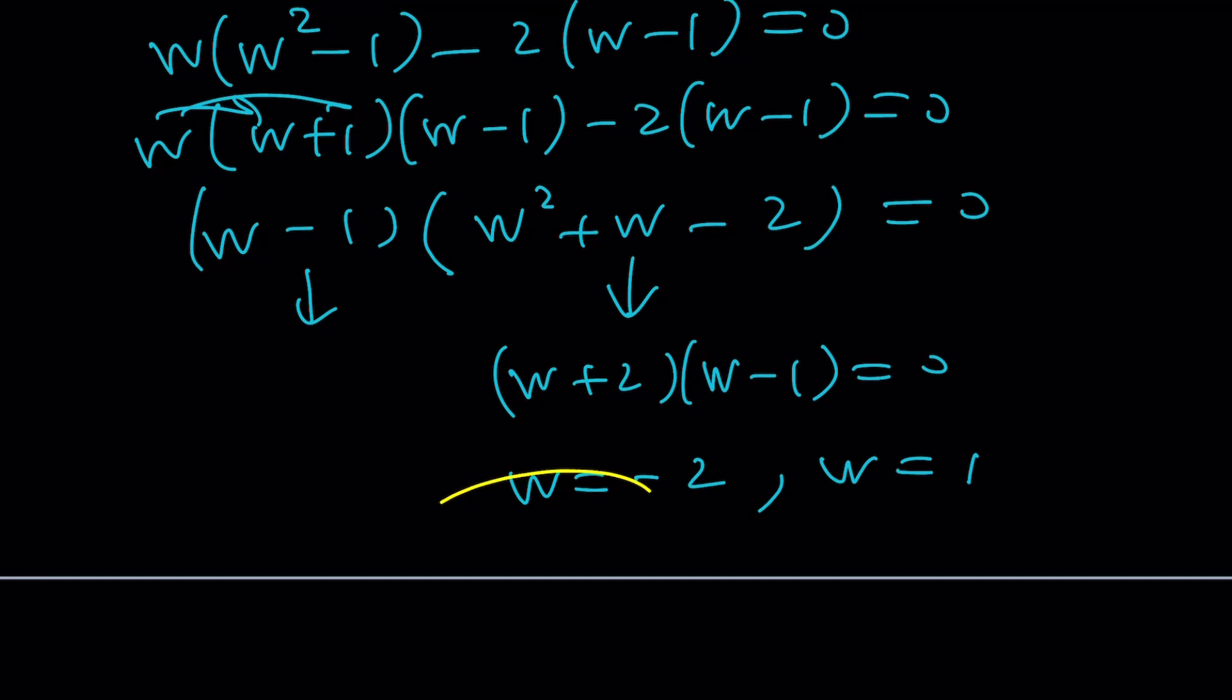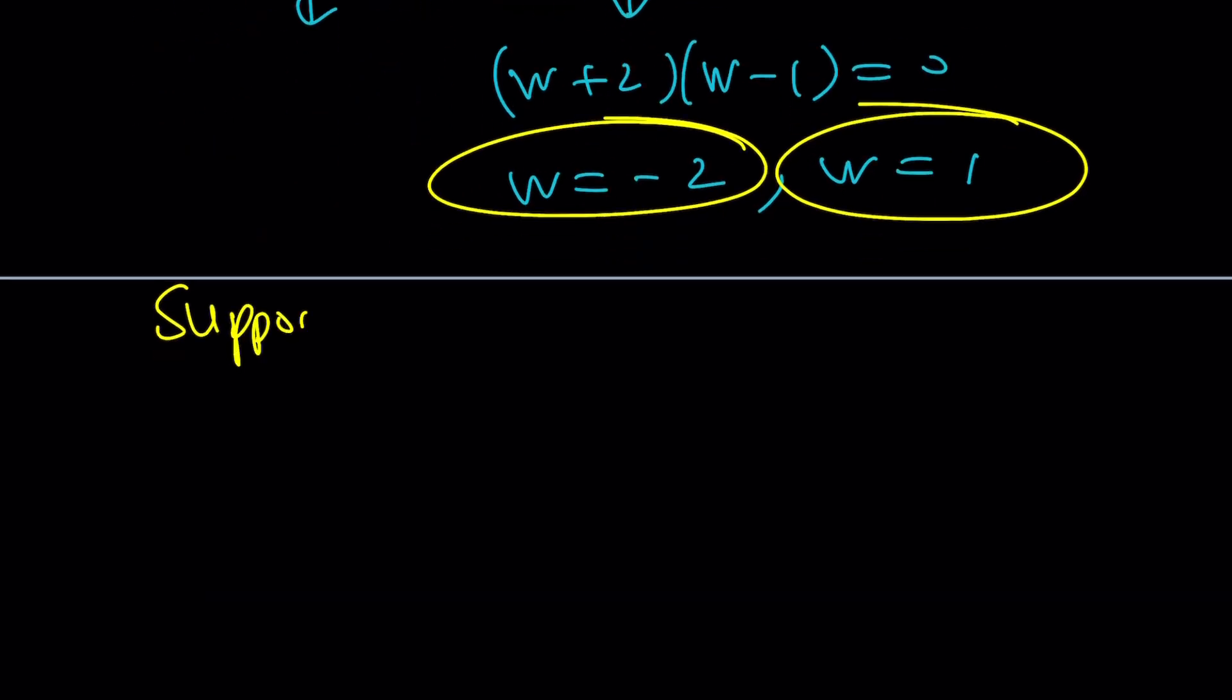We can just say that there are two solutions. One of them is repeated, but that's okay. We don't care. So we basically have these two as solutions. Now, suppose, again, we make a lot of assumptions. Suppose w equals z plus 1 over z is equal to 1. What happens in that case? Then multiply both sides by z. z squared plus 1 equals z, or z squared minus z plus 1 equals 0.